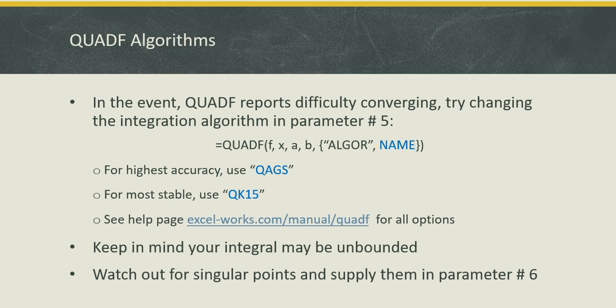These algorithms range from locally adaptive, like QAGS, which is the most accurate but most sensitive, to globally adaptive like the default algorithm QAG, or a fixed rule like QK15. If you want to go to a stable algorithm, try the QK15. And if that continues to have difficulty converging, then most likely your integrand is unbounded. If you want the highest accuracy, then try the QAGS, which is the most expensive locally adaptive algorithm. Also watch out if you have obvious irregular points or singular points in your integrand and try to supply them in argument number six.